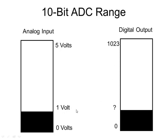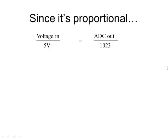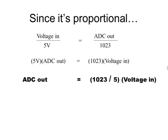It's the same kind of proportion, but in this case 1 volt compared to 5 is going to be proportional to our unknown compared to 1023. Plug our numbers in and do our proportion, and what we see is that our output is going to be the number 205.